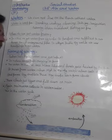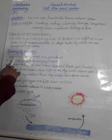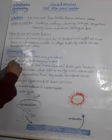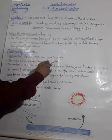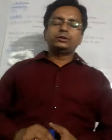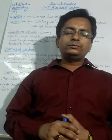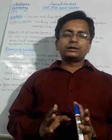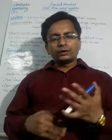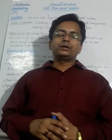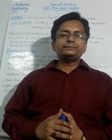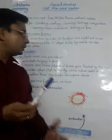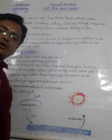Forms of water: water exists in three forms — solid, which is ice; liquid; and gas or vapor. When water gets cooled, it converts into snow or ice. When it starts melting, it converts into liquid form. When it evaporates, it converts into gas, or water vapor.